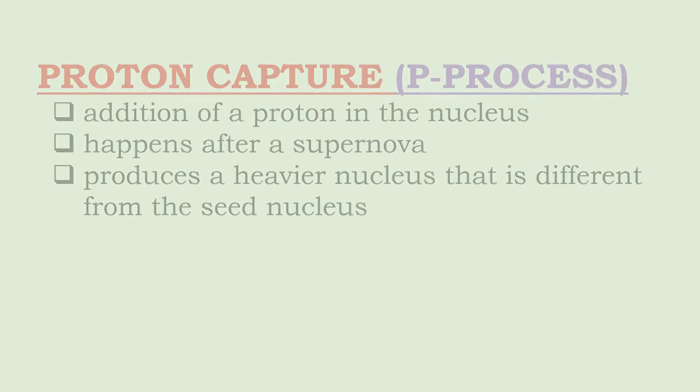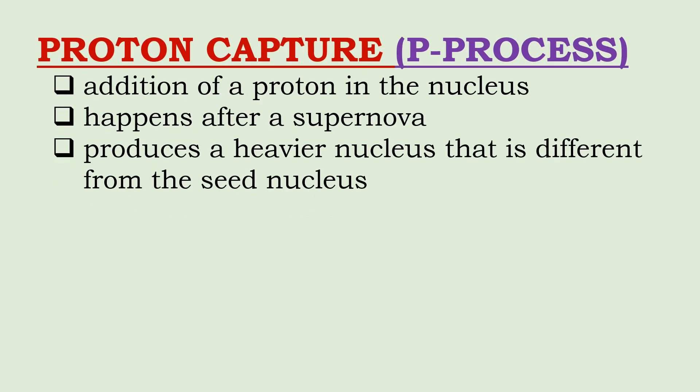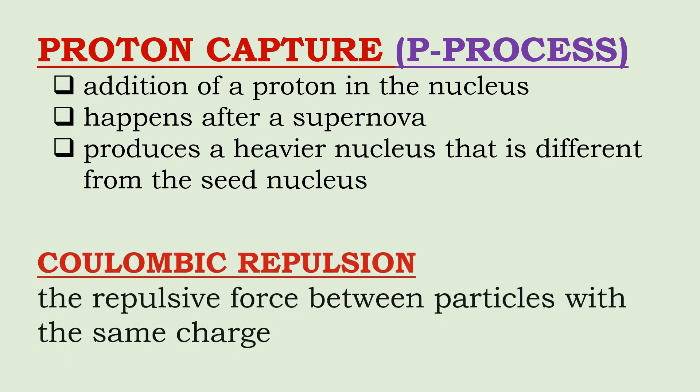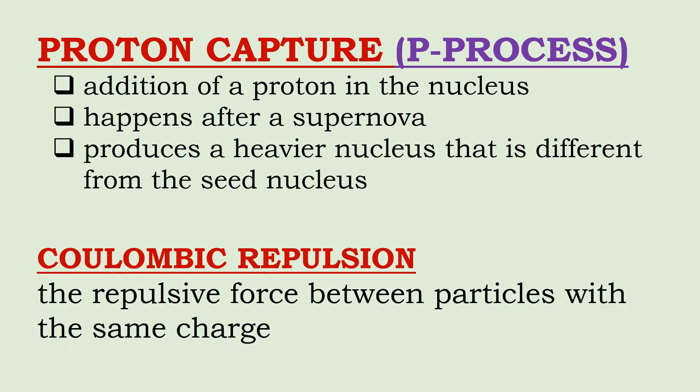Proton capture, or P-process, is the addition of a proton to the nucleus. It happens after a supernova, when there is a tremendous amount of energy available. This is because the addition of a proton to the nucleus is not favorable due to Coulombic repulsion, which is the repulsive force between particles with the same charge. Proton capture produces a heavier nucleus that is different from the seed nucleus.